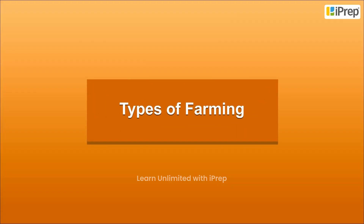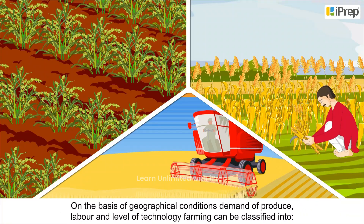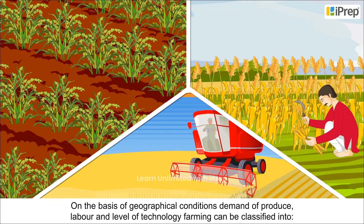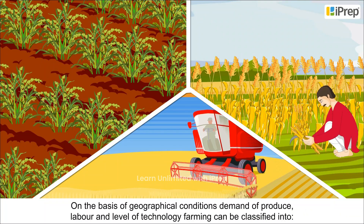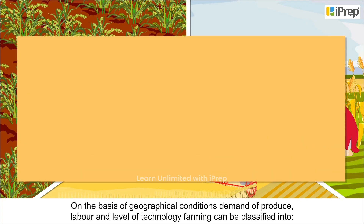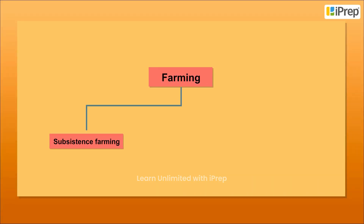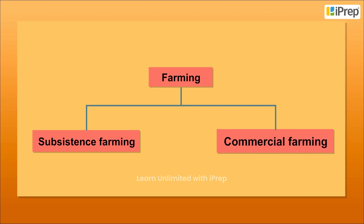Types of Farming: On the basis of geographical conditions, demand of produce, labour and level of technology, farming can be classified into subsistence farming and commercial farming.